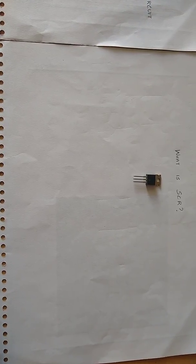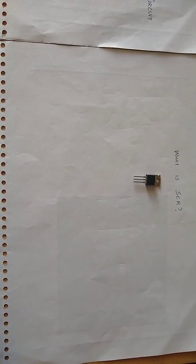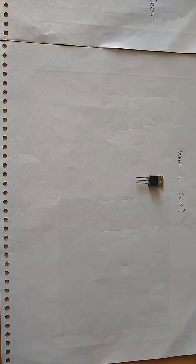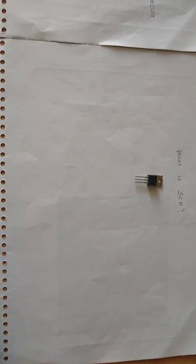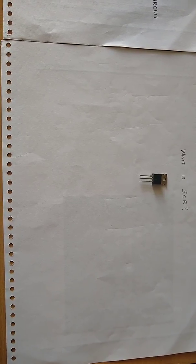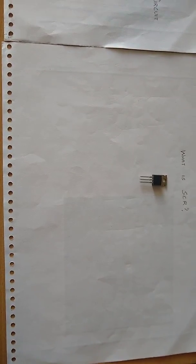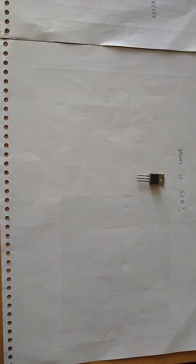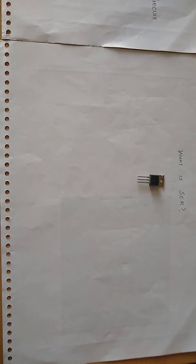The circuit which allow the gate to control SCR are called firing or triggering circuit. The various SCR triggering methods are forward voltage triggering, thermal or temperature triggering, radiator or light triggering, dV by dt triggering, and gate triggering.